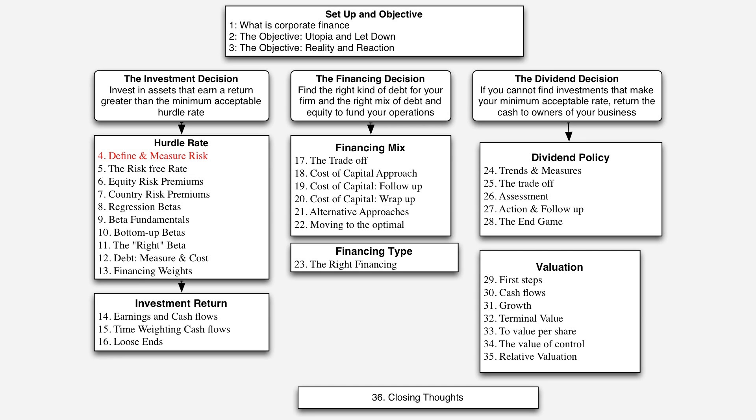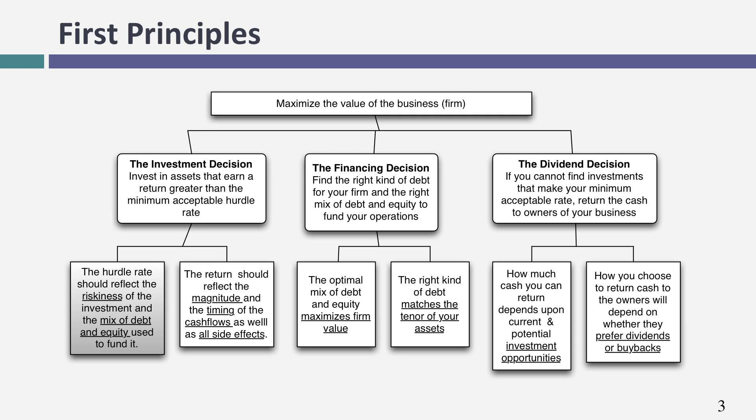In this session, we're going to start a discussion of hurdle rates. Remember, we've talked about the objective in corporate finance — to maximize firm value. If you accept that objective, the next question becomes picking the right projects. And to pick projects right, you need a hurdle rate. The hurdle rate should be higher for riskier investments and lower for safer investments. To put that hurdle rate in place, we need to measure risk and convert it into a number — 12%, 15%, 18%.